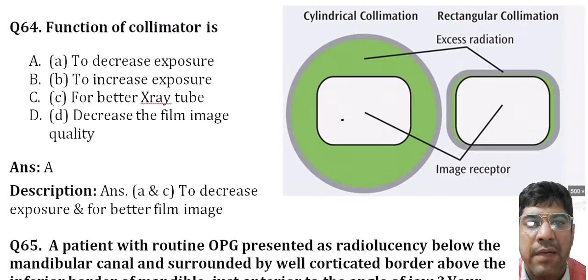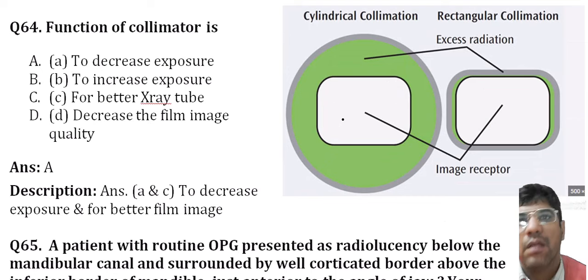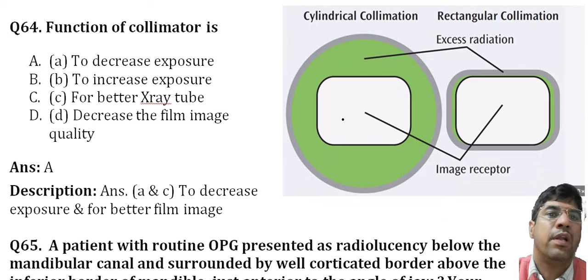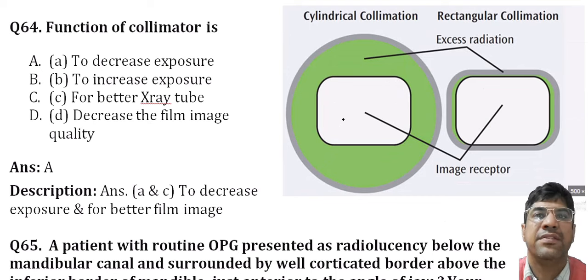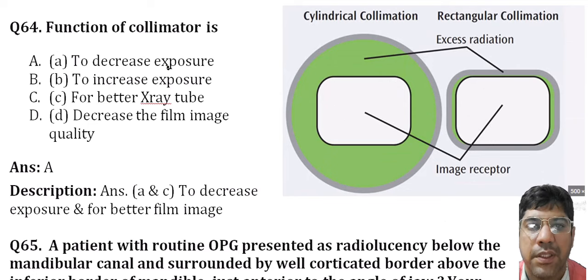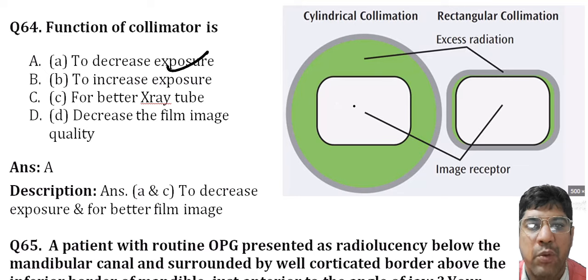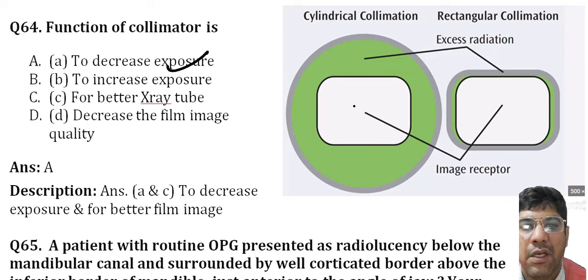The function of a collimator is to decrease the exposure. Collimators are used to limit the size and shape of the X-ray beam to the area being examined, reducing unnecessary radiation to surrounding tissue and providing better clarity.